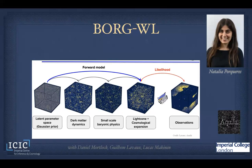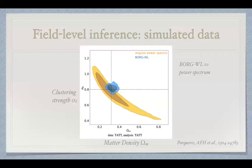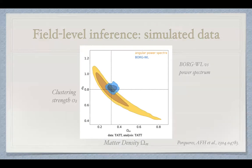My former postdoc Natalia Porcheres has been doing this for weak lensing. The advantage is that rather than compressing the data into summary statistics to start with, we're calculating the probability of the whole original data — nothing gets thrown away. We're sensitive to the two-point function, three-point function, everything. The payoff is that the posterior contours get much smaller than from traditional two-point statistics. This is a promising way to go.